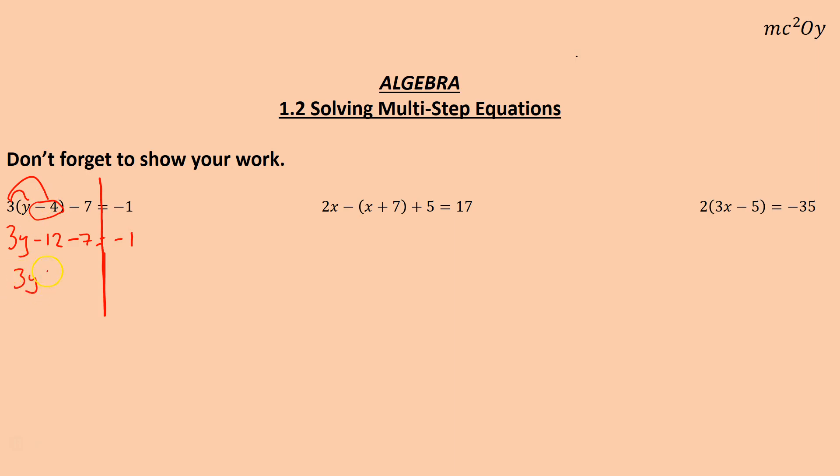So that gives me 3y and those two like terms, that's a negative 12 and negative 7. I have 12 negatives and 7 negatives, that's 19 negatives. Equals negative 1.